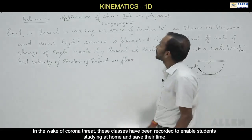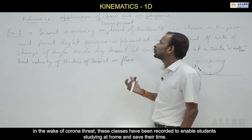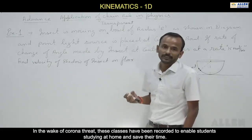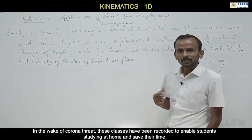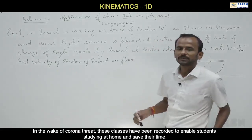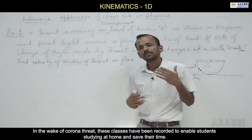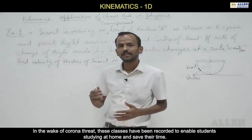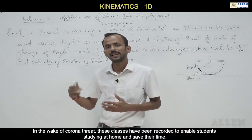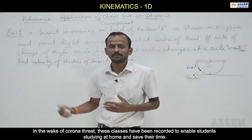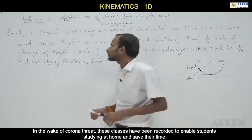Let's look at some advanced problems: how can we use the chain rule in physics? In physics there are many chain rules. In maths there will be a lot of functions and only mathematical applications — you differentiate the function and the answer comes. How can we use the chain rule in physics?